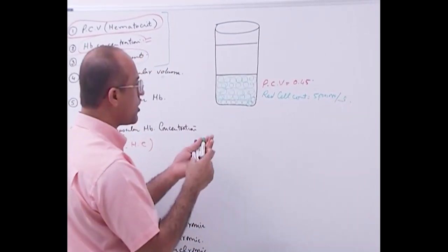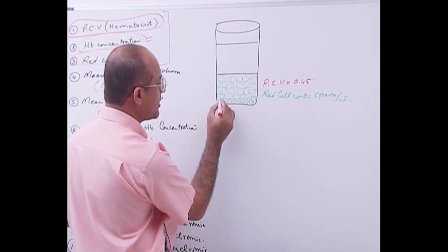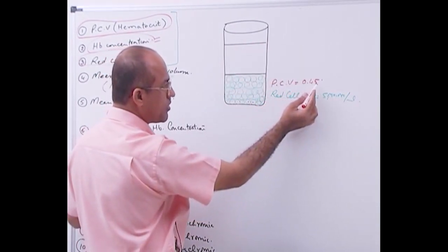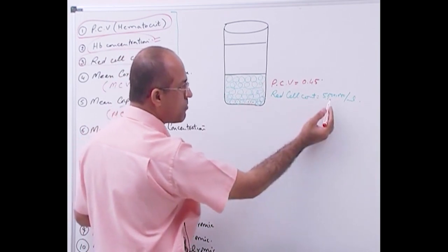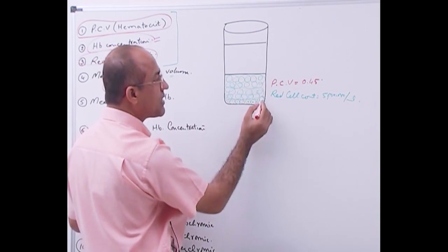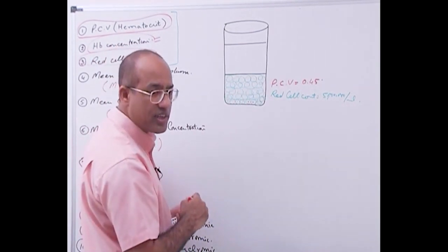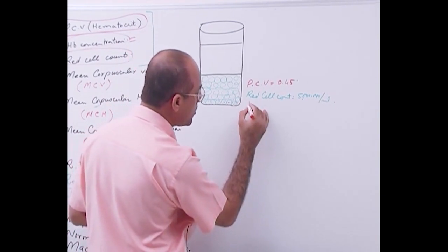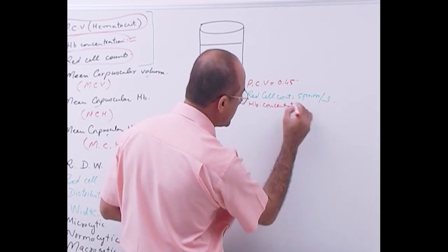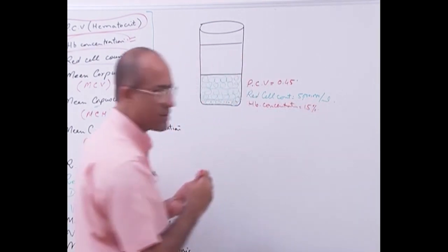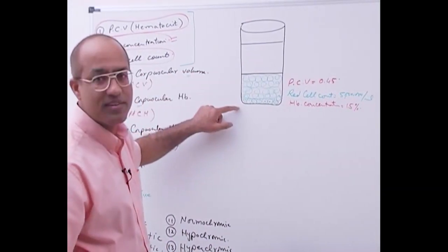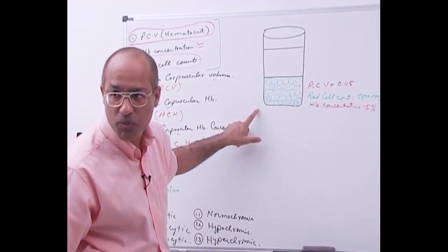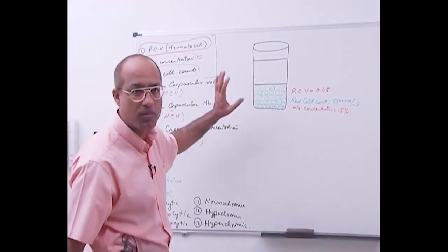Then we talked about hemoglobin concentration. In this total unit of blood, the packed cell volume was 0.45, every ml was containing 5 million RBCs, and the hemoglobin packed in these RBCs was 15 percent. If it is 1 liter of blood, hemoglobin will be 150 grams; if it is 100 ml, hemoglobin will be 15 grams.